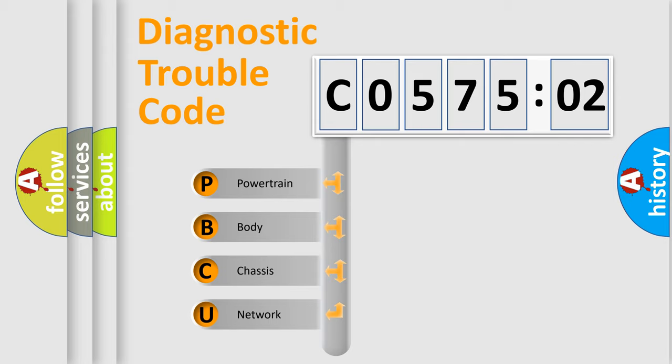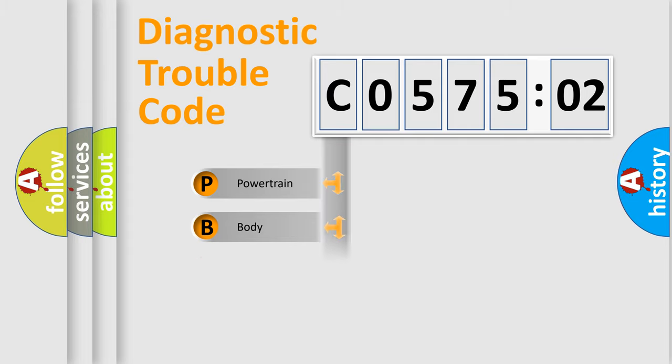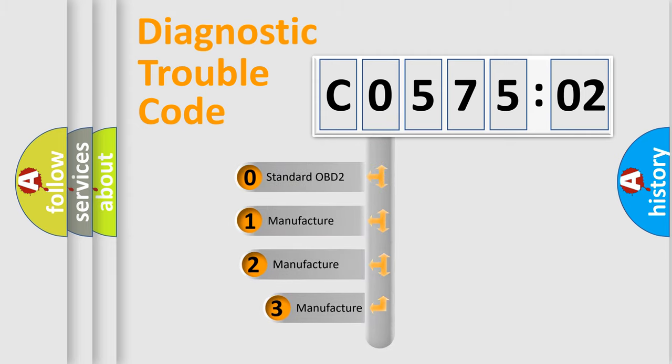We divide the electric system of automobile into four basic units: Powertrain, Body, Chassis, and Network. This distribution is defined in the first character code.